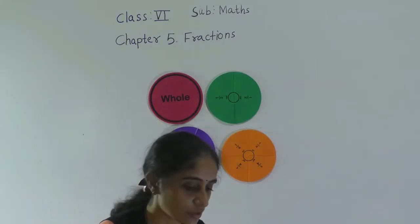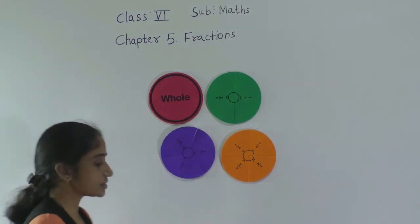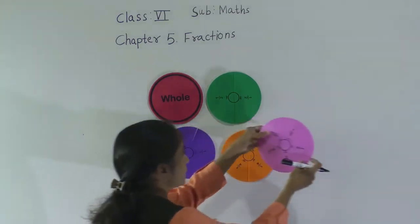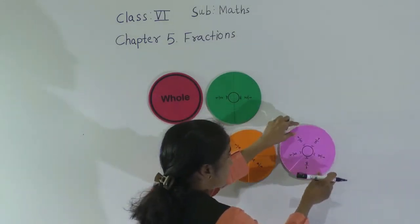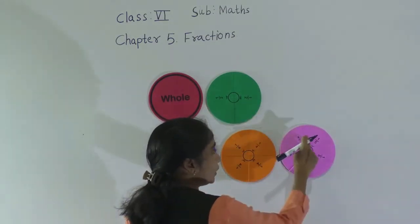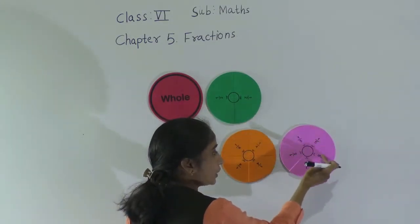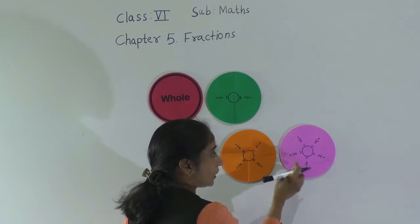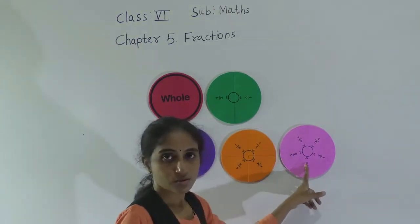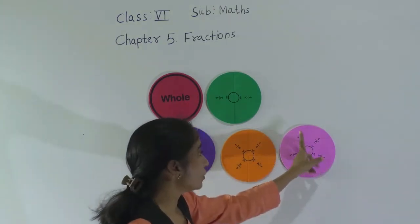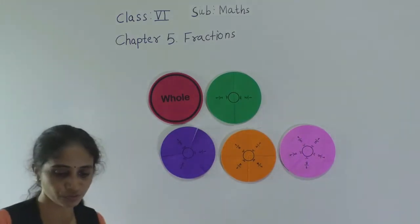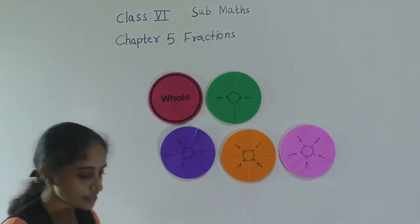Same — it is divided into five equal parts: one, two, three, four, five. These are five equal parts, so one fifth. Which part is one fifth? One fifth.